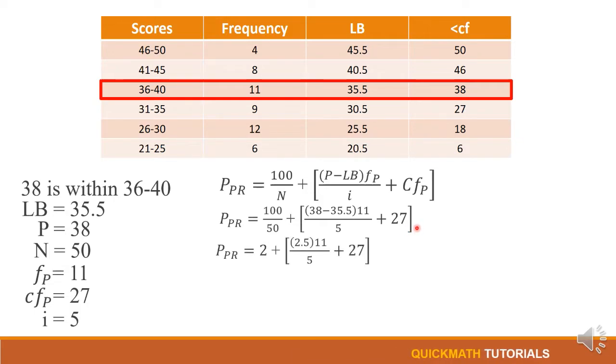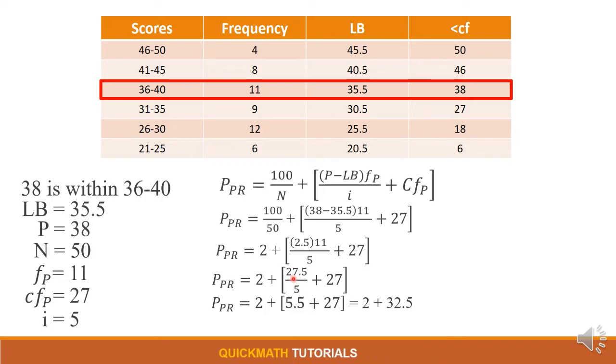So first let's solve the numbers inside the parenthesis. So we have 38 minus 35.5, we have 2.5. And next step is we will multiply 2.5 and 11, so we have 27.5. Next is we will divide 27.5 by 5, so we have 5.5. And next is 5.5 plus 27, we have 32.5. So we just copy these two. And for our final answer we have 34.4, or we will round it off so we will get 35 percent.